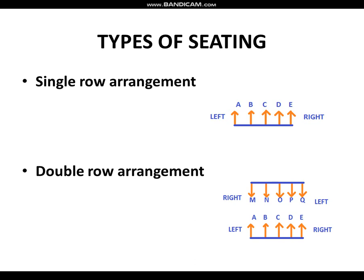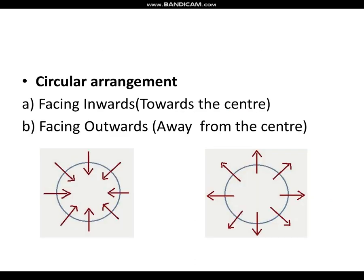Double row arrangement has two rows which are parallel — people sitting in those parallel rows may face inside or outside, depending on your question. The best example is people sitting around a rectangular dining table. The third type is circular arrangement, where you have two types: facing inside and facing outside. Facing inside — people sitting around a dining table; facing outside — people playing musical chairs.